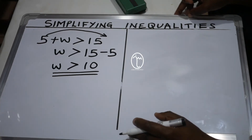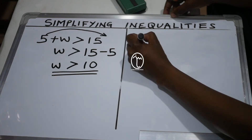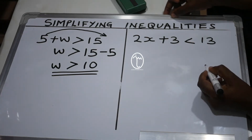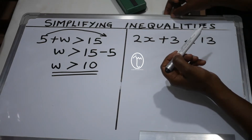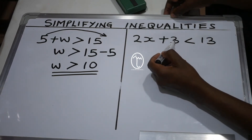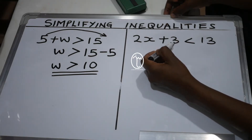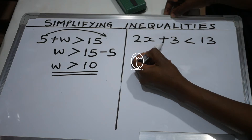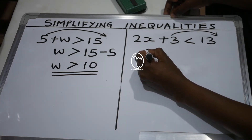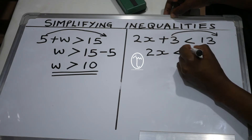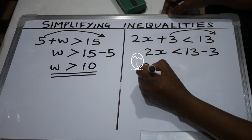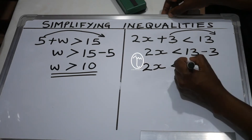Now we try a slightly different question: 2x plus 3 is less than 13. The like terms are 3 and 13. We move the lesser number, 3, to the other side. Checking the sign on the left of 3 — it is positive, so it changes to minus as we move it. We are left with 2x is less than 13 minus 3, which is 10.